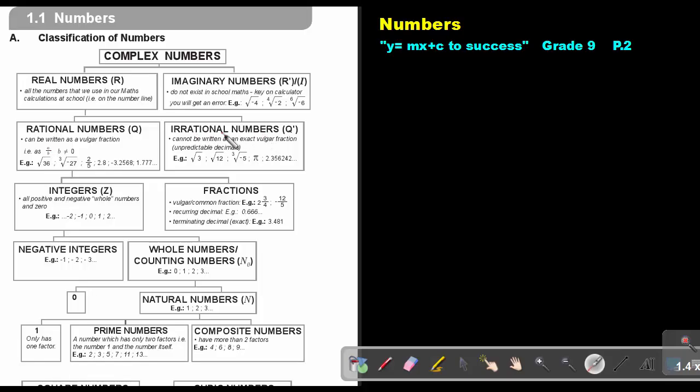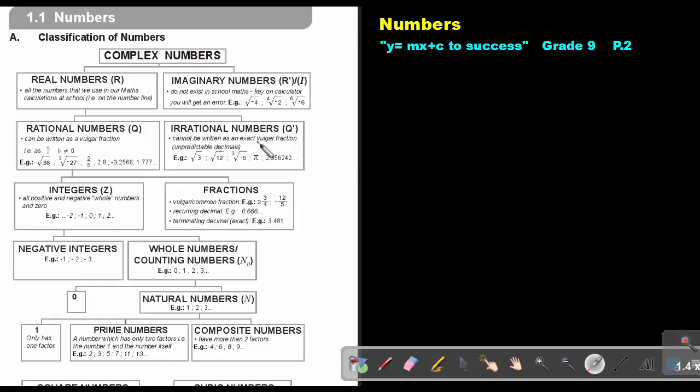Irrational numbers cannot be written as an exact vulgar fraction. It's giving you the decimals, and it's just continuing, continuing, continuing. The same with the letter pi.